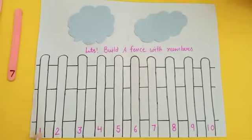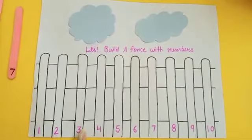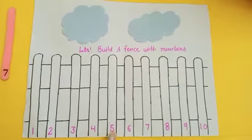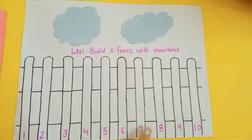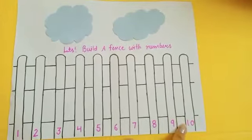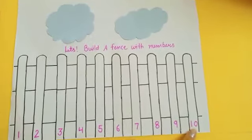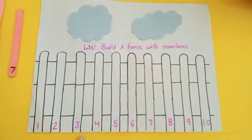Yes, this is number 1, 2, 3, 4, 5, 6, 7, 8, 9, and this is number 1, 0, 10. Now kids let's make a fencing with these numbers.